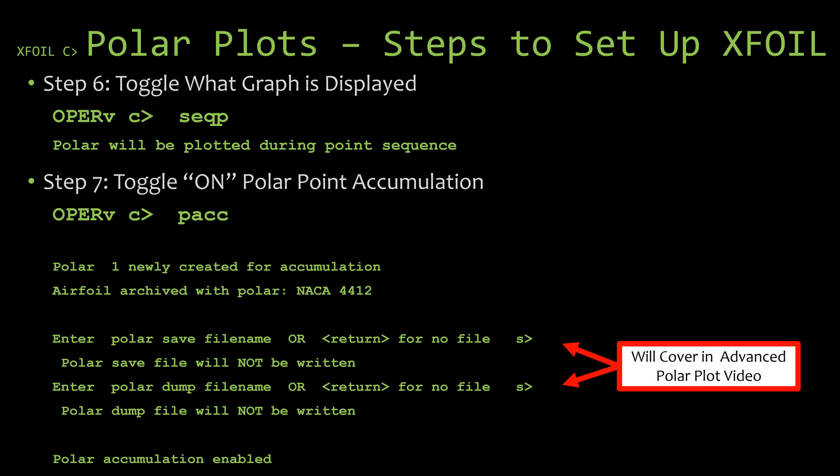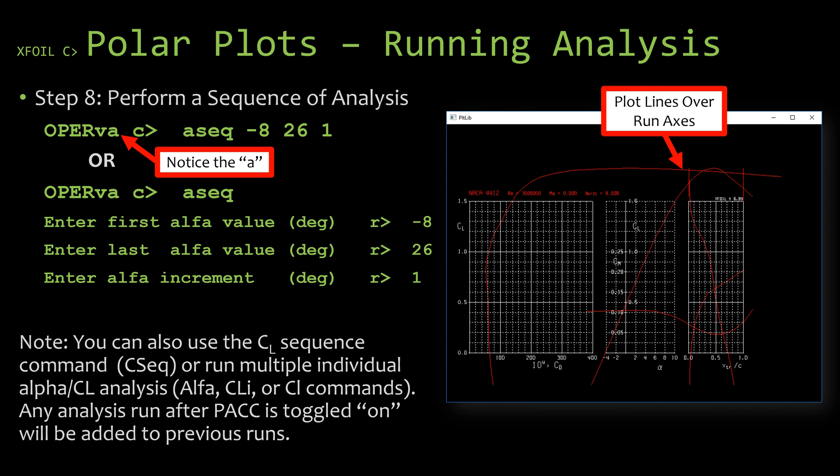And as you can see there at the bottom, XFOIL prompts us and tells us that the polar accumulation has been enabled. So now when we run a sequence of angle of attack or a sequence of coefficient of lift, XFOIL will store the value and we'll be able to see it on the plot. Now we're done setting up XFOIL and we're ready to run our analysis.